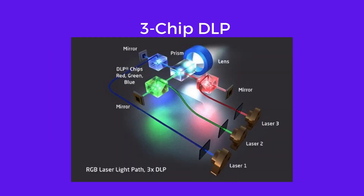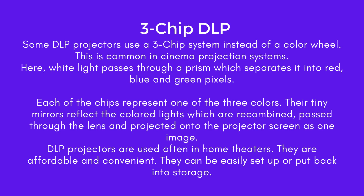Some DLP projectors use a three-chip system instead of a color wheel, which is common in cinema projection systems. Here, white light passes through a prism which separates it into red, blue, and green pixels. Each of the chips represents one of the three colors. Their tiny mirrors reflect the colored lights, which are recombined, passed through the lens, and projected onto the screen as one image. DLP projectors are often used in home theaters — they are affordable, convenient, and can be easily set up or put back into storage.